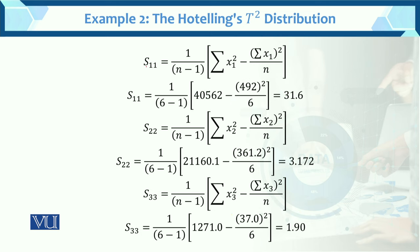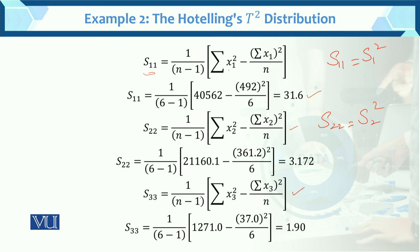Now S11, which equals S1 squared — this is the variance. The formula for variance is (1/(n-1)) * [sum(x1 squared) minus (sum(x1)) squared divided by n]. That is why we found x1 squared and sum of x1 — we enter the values and get S11. Similarly, S22 which equals S2 squared — the variance formula is the same — we have determined the variance. Then S33 — all its values are also found and entered.